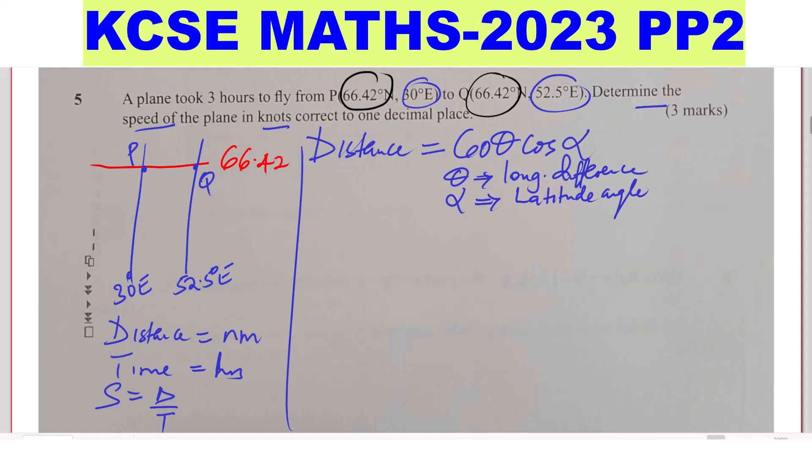We just need to work out what is the longitude difference. We get the longitude difference by considering the longitudes of these two, longitude of P and longitude of Q. One is 30 degrees east, the other one is 52 degrees east. They are located, both of them, to the east. To get the difference, you subtract: 52.5 degrees minus 30 degrees, and this will give 22.5 degrees.